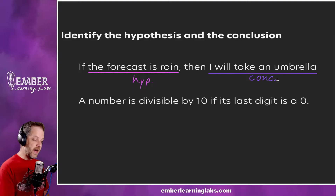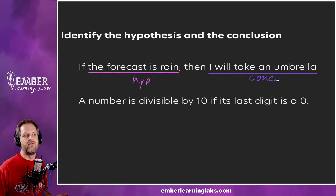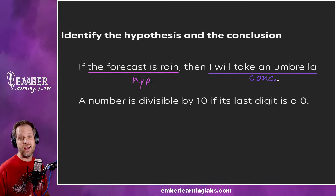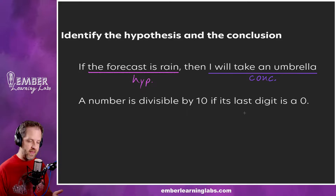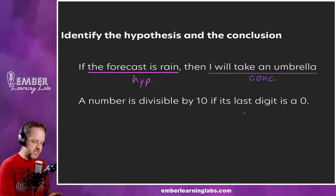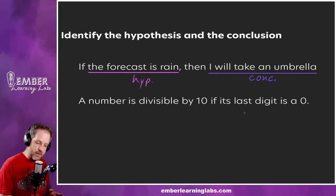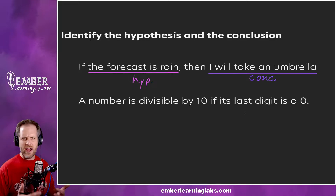The conclusion of that statement is 'I will take an umbrella.' This one is easy because it literally has the words 'if' and 'then' — it's already written in if-then form. Our next set of examples involves rewriting statements into this format. The second example is: 'a number is divisible by 10 if its last digit is a zero.' This one is a little bit different.